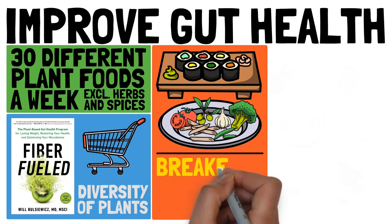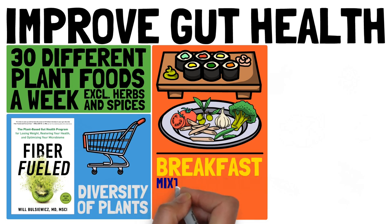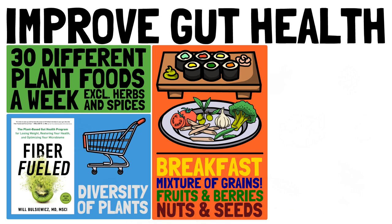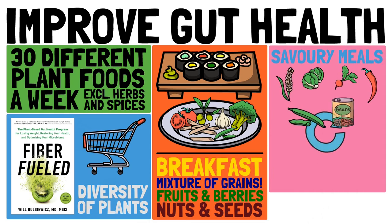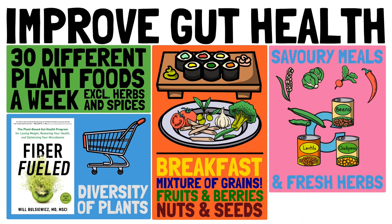Think about your breakfast. Do you eat the same kind of rolled oats every day? Why not go for a mixture of rolled grains? Think about all the different fruits and berries you could use, the nuts and seeds you could sprinkle on top. For your savory meals, try some new vegetables, cycle through various beans and lentils, and use a variety of fresh herbs. The possibilities are endless.